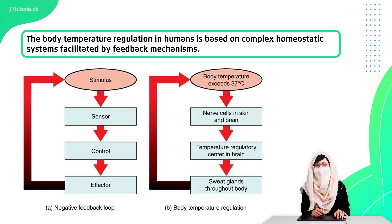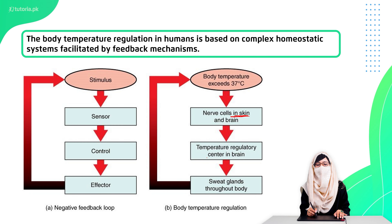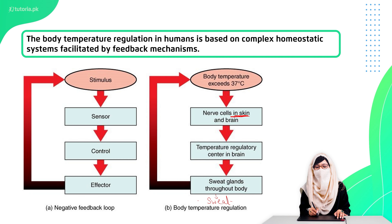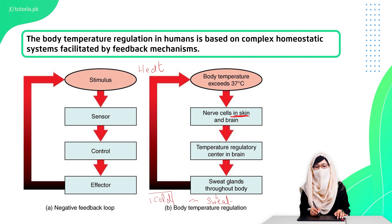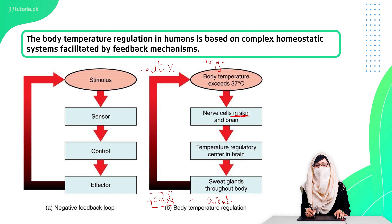This stimulus will be felt by our sensors. In the case of temperature, the nerve cells are inside the skin, and the message from the skin cells goes to our brain. The brain then signals the sweat glands to produce sweat, and the sweat cools the body down. This response nullifies the original stimulus, which is why we call this mechanism the negative feedback mechanism.